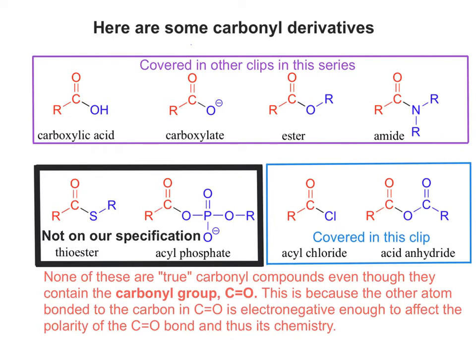If you look closely, you'll see that you've got things like oxygen, nitrogen, sulphur, chlorine — all electronegative atoms compared to carbon — and they will affect the polarity of the C=O. So the carbon atoms I've highlighted are all part of a C=O, which for itself is polar, but they're also bonded to another electronegative atom, which will also draw electron density towards itself. So the behaviour of the C=O is affected.